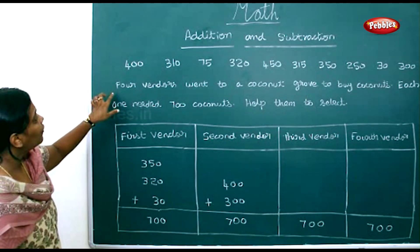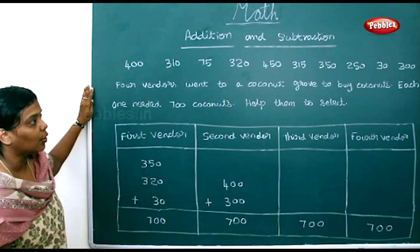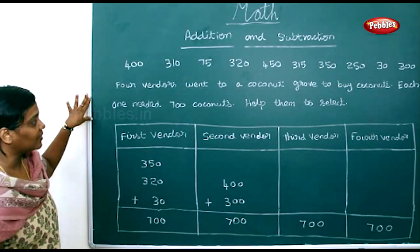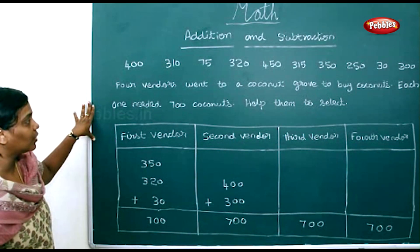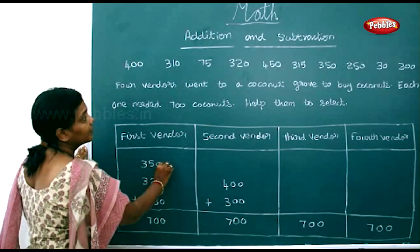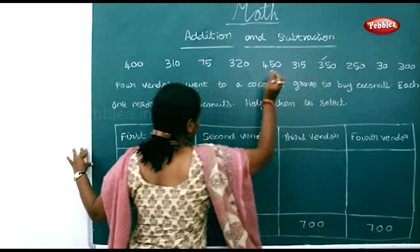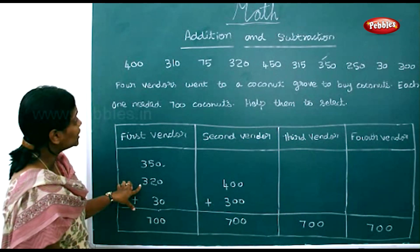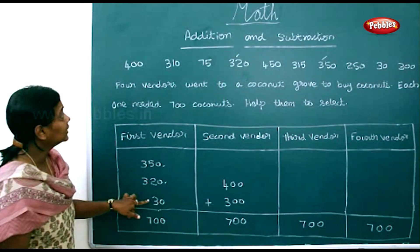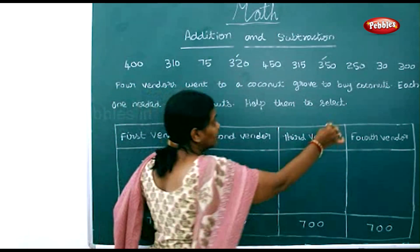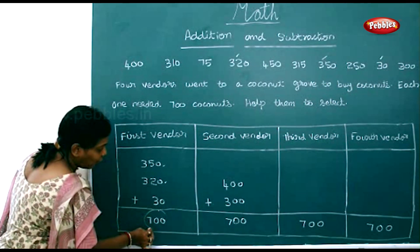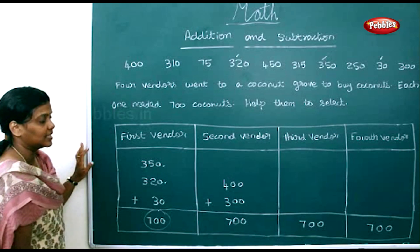Four vendors went to a coconut grove to buy coconuts. Each one needed 700 coconuts. The first vendor selected 350 coconuts, then he went again to find 320 coconuts, then again 30 coconuts. With the help of these three numbers, he formed 700 coconuts.